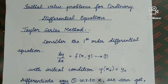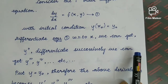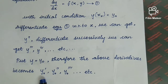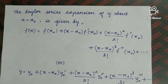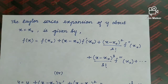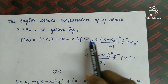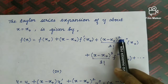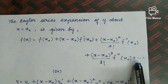Now differentiate equation 1 with respect to x. We can get y double dash. Equation 1 means y dash; when you differentiate, we need y double dash. By successive differentiation of equation 1, we can get y triple dash, y fourth derivative, and so on. Putting x equal to x0 and y equal to y0, we can get y0 dash, y0 double dash, and so on. The Taylor series expansion of y about x equal to x0 is given by: f(x) = f(x0) + (x − x0)f' + (x − x0)²/2! f'' + (x − x0)³/3! f''' + ...